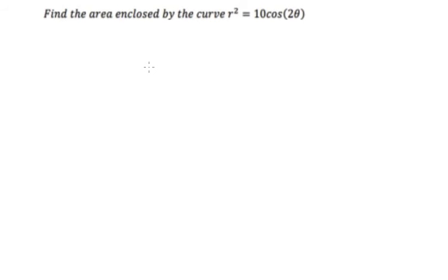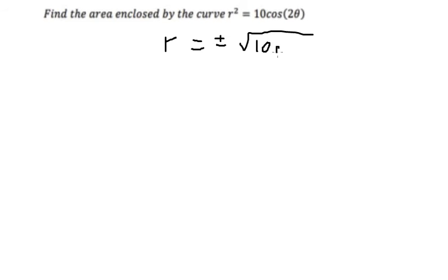Hello everybody. Today I will talk about calculus — the topic is about cardioid. I will show you how to answer. We put the square root on both sides, so we have positive and negative the square root of 10 cosine 2 theta. We have the formula for this one.